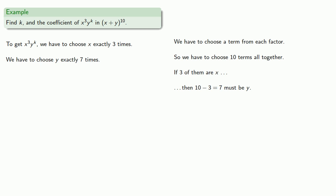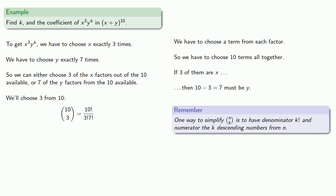And so this means we can either choose three of the x factors out of the ten available or seven of the y factors out of the ten available. We'll choose three from ten. So that's ten choose three, is ten factorial divided by three factorial, seven factorial. The denominator is going to be three factorial, that's one times two times three. And the numerator will start at ten and descend until we have three factors. So that's ten, nine, eight, equals 120.